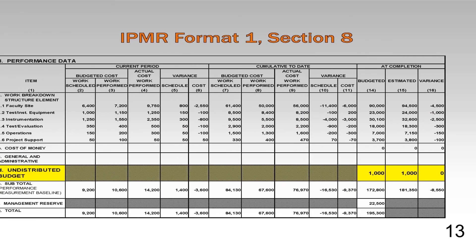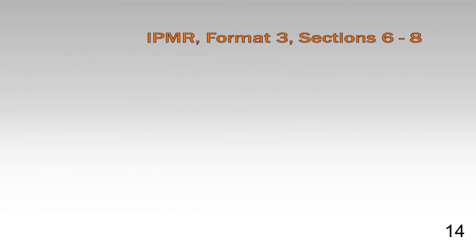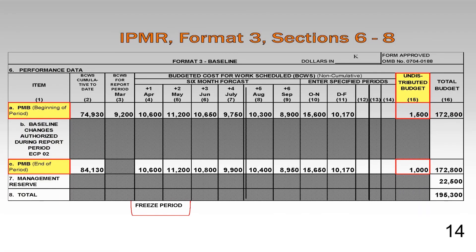This is an example of the IPMR Format 1. The project has $1 million in undistributed budget, which is in Block 8D, Column 14. The IPMR Format 3 shows the same $1 million of undistributed budget at the end of the period in Block 6C, Column 15. At the beginning of the period, the UB amount in Block 6A, Column 15, was $1.5 million. During the period, $1.5 million was distributed for ECP-02, increasing the PMB in the periods June, July, August, September, and October-November. Note that the contractor honored the PMB freeze period change restrictions, assumed to be two reporting periods, with the distribution beginning in the third month from time now.